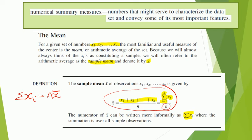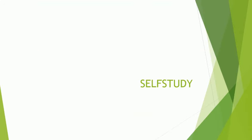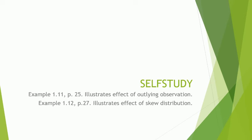I'm going to consider a number of examples to illustrate concepts like the sample mean and the sample median. But in the textbook you have some examples you can do on your own. Self-study is example 1.11 on page 25, which illustrates the effect of an outlying observation on the sample mean. Also look at example 1.12 on page 27 — the effect of a skew distribution on the mean is illustrated. And example 1.13 on page 29 is something you have to do on your own.